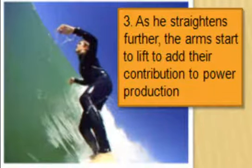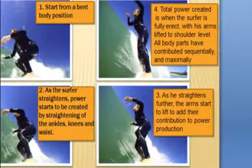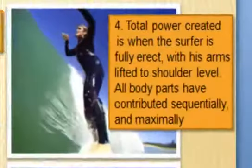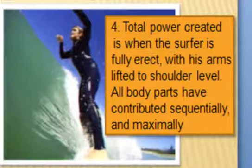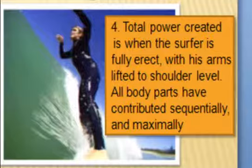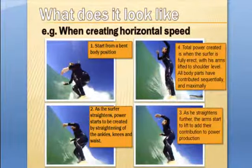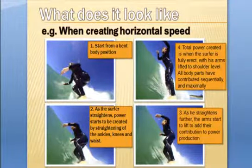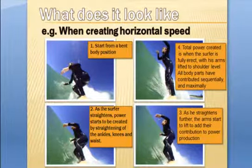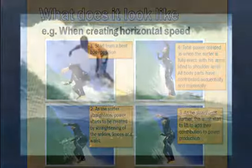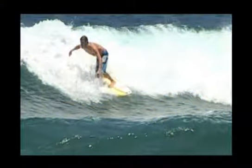So what does it look like? We can have a look at four diagrams — four pictures — and this is what a surfer does when they create horizontal speed. The technique is that you start from a bent body position, which might be the body position at takeoff, and you turn and go across the wave to create horizontal speed — to accelerate into the first maneuver of the ride or to make a long section. So you start from a bent body position.